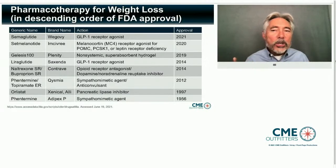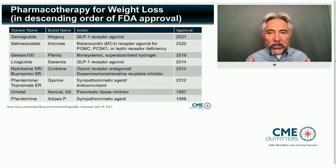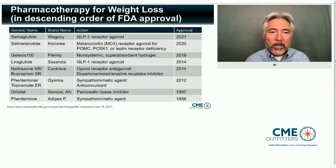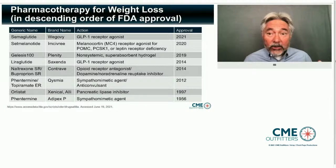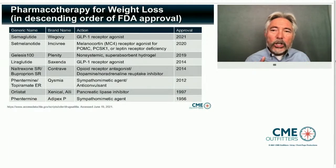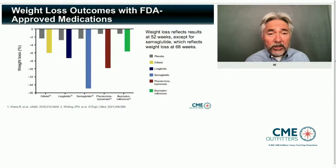Nobody knows exactly how topiramate works — we're guessing it's through the GABA system in the hypothalamus to give a feeling of satiety. Phentermine is a stimulant working along the norepinephrine-dopamine pathway. Then there's oral orlistat — an older over-the-counter medication that blocks the uptake of fat as a lipase inhibitor. Finally, phentermine by itself has been around since the fifties — approved for short-term use, about 12 weeks in a 12-month period.